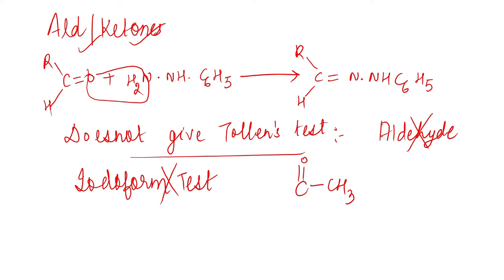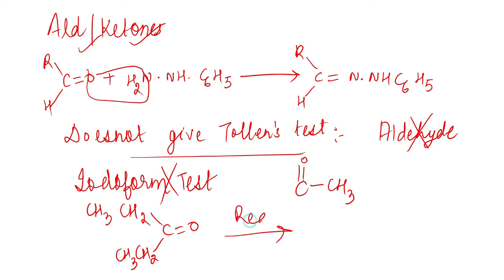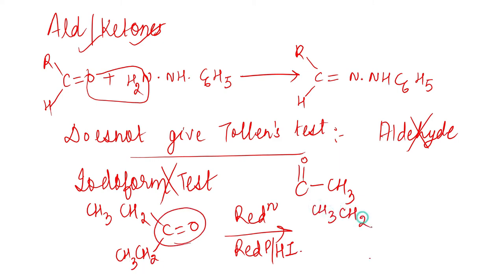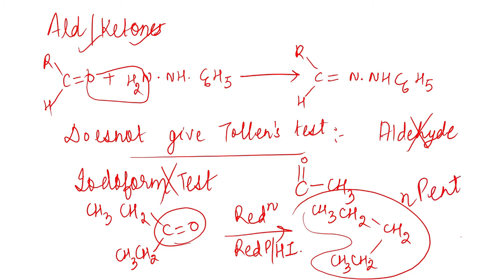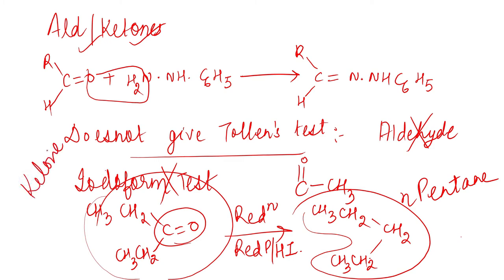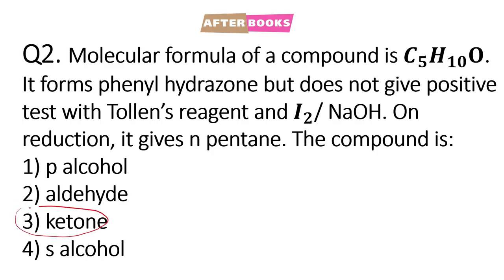Aur given hai ki agar hum is compound ki reduction karvate hai toh hume n-pentane milta hai — iska matlab yeh compound pentan-3-one hai, that is CH3CH2COCH2CH3. Kyunki jab hum iski reduction karvayenge with red phosphorous along with HI, toh CO group will convert into CH2 group, aur this gives n-pentane. Toh it means humara jo compound hai this is a ketone, which is option number 3.